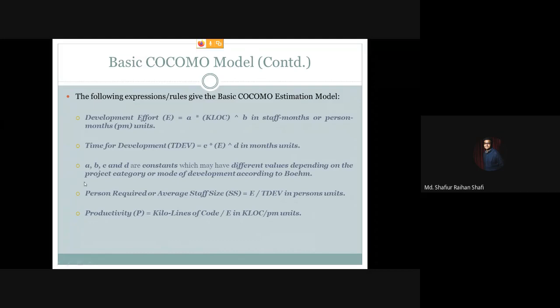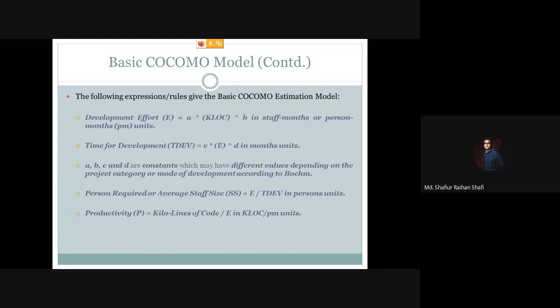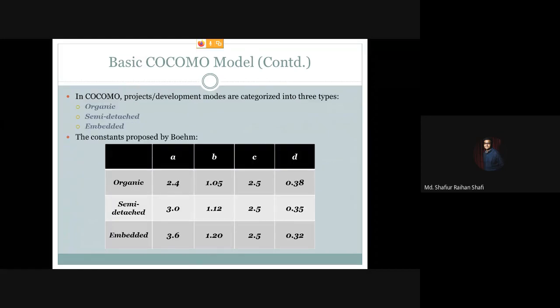In the basic COCOMO model there are three project categories or development modes: the first is called Organic, the second is called Semi-Detached, and the third is called Embedded. According to Boehm, the constants a, b, c, and d used to calculate development effort and time for development have different values depending on the type of project.